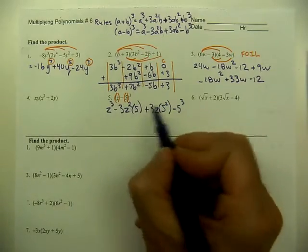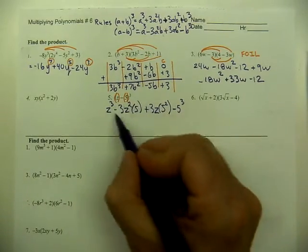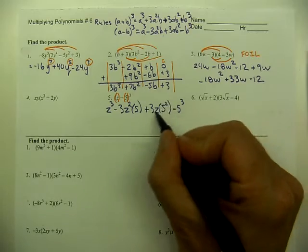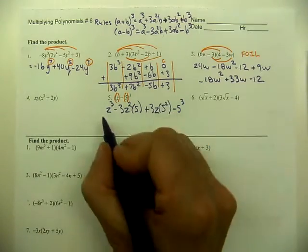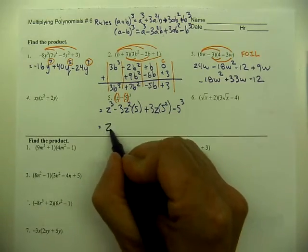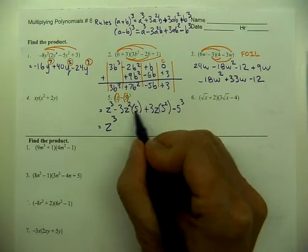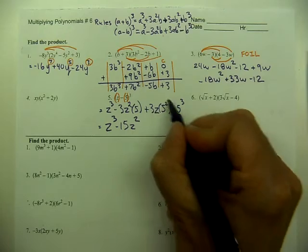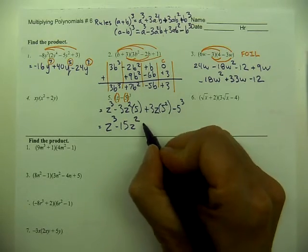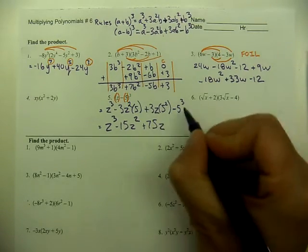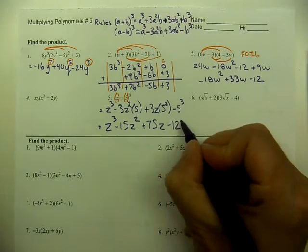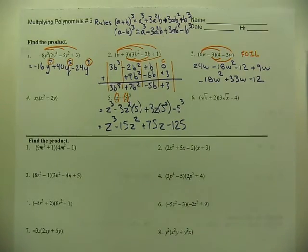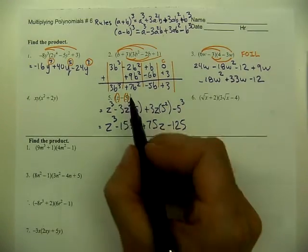Now we want to clean that up. In these middle terms, remember the order of operations—you want to do the exponent before the multiplication itself. This will end up being z to the power of three. Here we have five times three, so negative 15z squared. Here we have five squared is 25 times three is 75, so 75z. And lastly, five cubed, so negative 125.